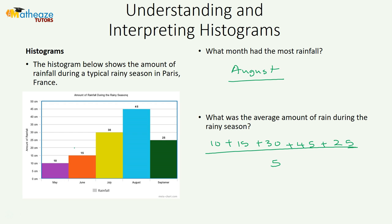So for the average: 10 plus 15 is 25, plus 30 is 55, plus 45 is 100, plus 25 is 125 centimeters. Divided by 5, which is equal to 25 centimeters of rain.